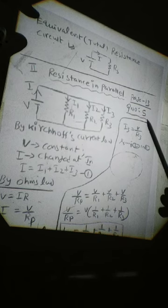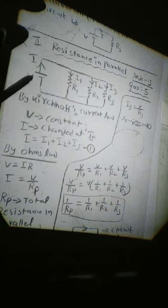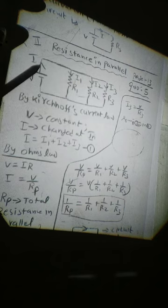This is part 1. Now part 2 — resistance in parallel. This is page number 13, question number 5. In parallel, voltage V is constant. Current I changes at the junction. The total current I equals I1 plus I2 plus I3.